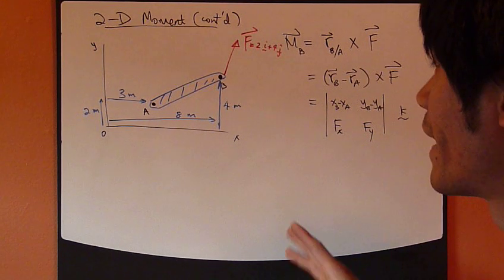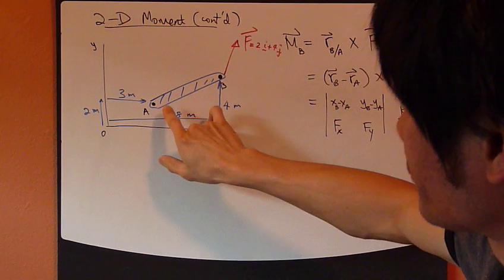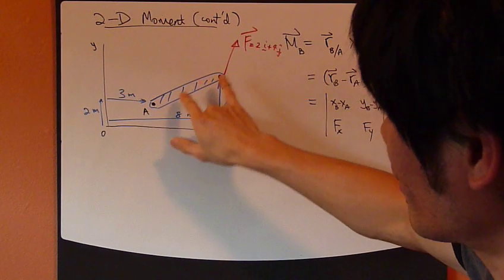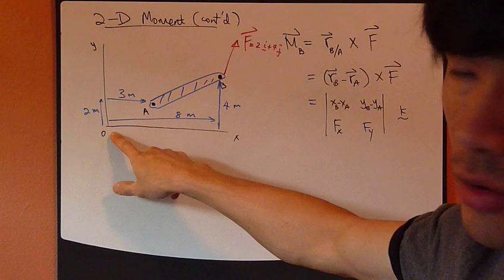So a little bit more about moment in 2D. When you take moments where the R, the position vector, is measured from point A to point B instead of from the origin.